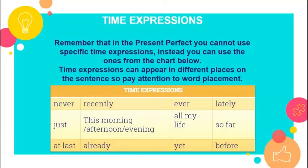That's why here you have a chart with common time expressions. Time expressions can appear in different places on a sentence, usually all the way at the end or after the subject and before the verb. Here you have some examples about time expressions like never, just, last, ever, yet, before, lately, so far.